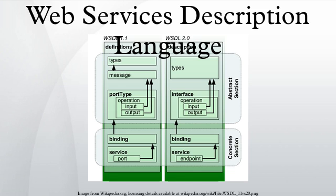WSDL is often used in combination with SOAP and an XML schema to provide web services over the internet. A client program connecting to a web service can read the WSDL file to determine what operations are available on the server. Any special data types used are embedded in the WSDL file in the form of XML schema. The client can then use SOAP to actually call one of the operations listed in the WSDL file using, for example, XML over HTTP.